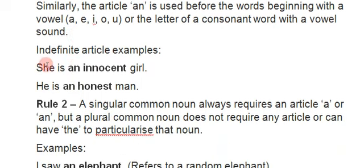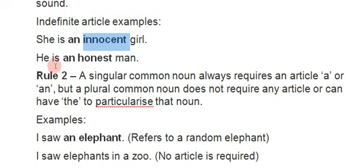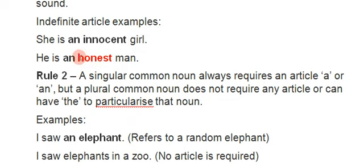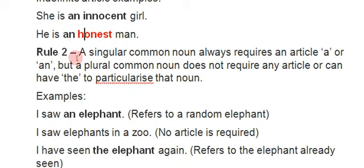Example: 'She is an innocent girl' — 'innocent' starts with the vowel sound 'i', so we use 'an innocent'. Another example: 'He is an honest man' — here 'honest' starts with 'h', which is a consonant, but the 'h' is silent, so the first sound is a vowel sound. Therefore we use 'an honest man'.